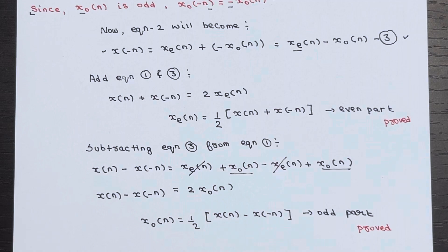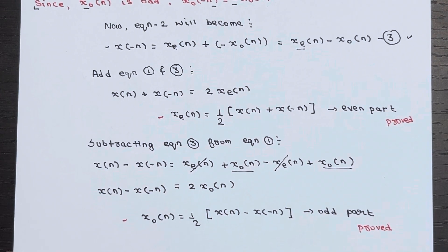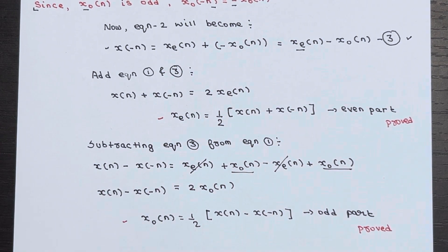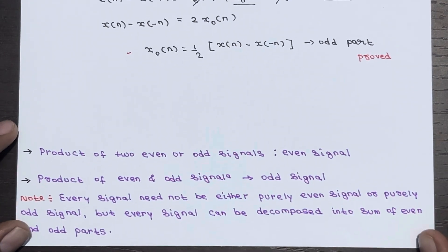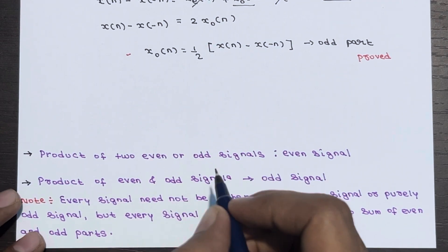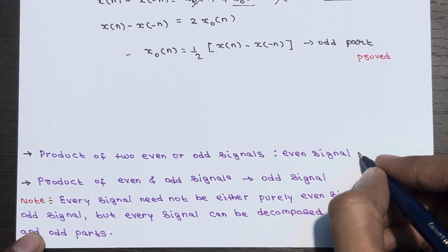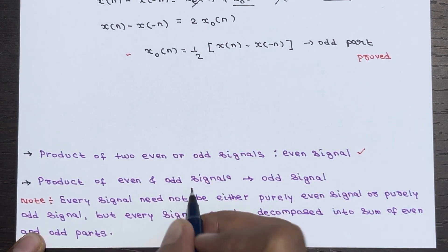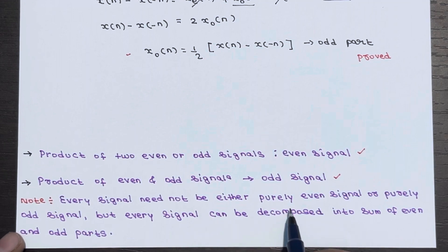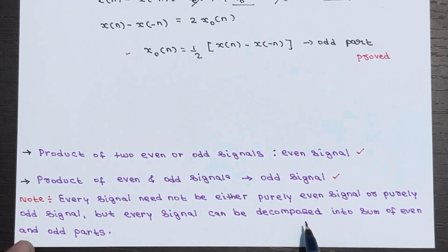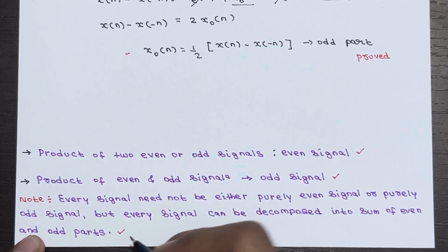So we have completed the evaluation of the even part and odd part of a signal. We had seen the formulas directly in the last lecture, but here we have proved them. Some important points to consider: the product of two even signals or two odd signals gives an even signal; the product of an even and an odd signal gives an odd signal. Also, every signal need not be purely even or purely odd, but every signal can be decomposed into a sum of even and odd parts.